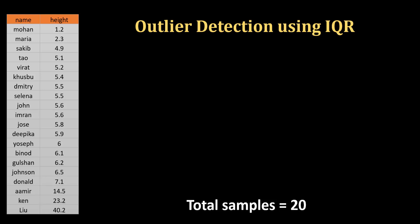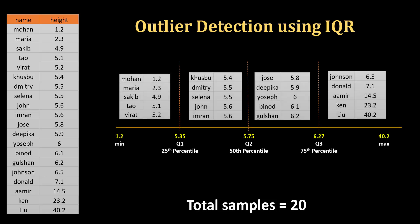In order to understand IQR you first need to understand percentile. For example, here I have 5.35, which is the 25th percentile — also called Q1. The 25th percentile value means that in your dataset 25 percent of samples are below this value. Total samples here are 20, so 25 percent of 20 is 5, and 5 samples are having value less than 5.35 — you see 5.2, 5.1, all these values are less than 5.35.